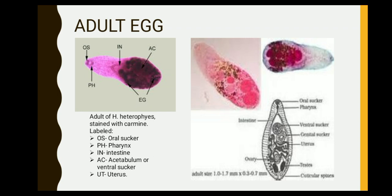The adult Heterophyes has an oral sucker, the pharynx, the intestine, the ventral sucker, the uterus, and the ovary. The adult worm size ranges from 1.0 to 1.7 mm by 0.3 to 0.7 mm. That concludes the report. Thank you for listening and God bless us all.